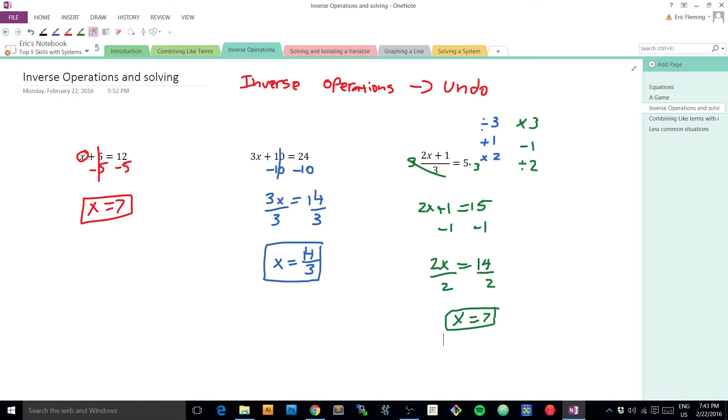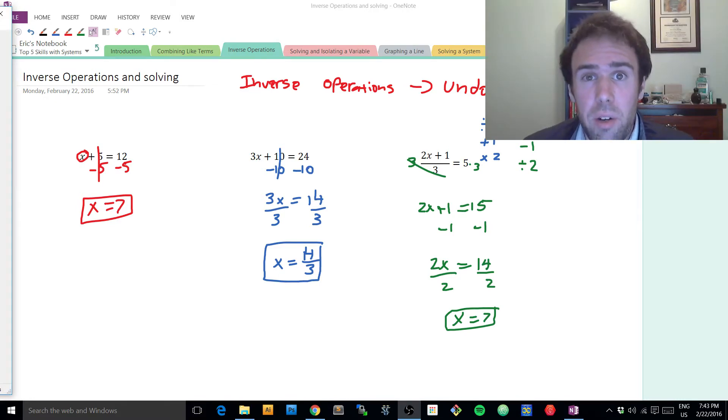So when we're thinking about inverse operations, we have to make sure that we have a plan. That we're looking for the innermost layer and going all the way out until we find the outermost. And we have to go from the outside in. That's a pretty important feature right there.